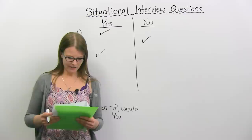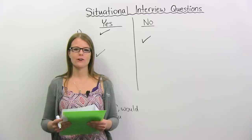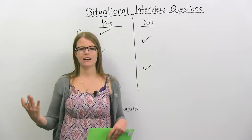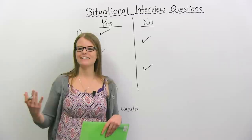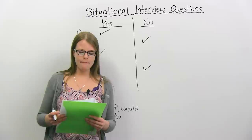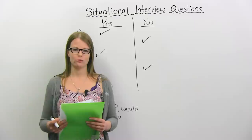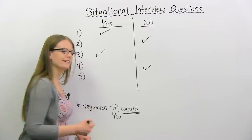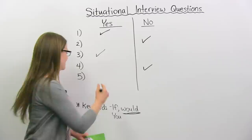The next question: 'Why do you want to work for our company?' This is not situational. You're just talking about your reasons for wanting to work for a company — you're not really imagining a situation. And the last question: 'Imagine you have a deadline and you are running out of time — what would you do?' You heard the word 'would' — 'what would you do?' — so that one is situational.